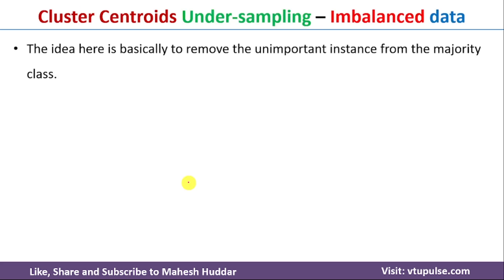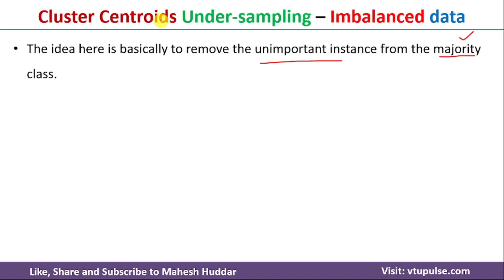Cluster Centroids is an under-sampling technique where we remove unimportant instances from the majority class. Whenever we have an imbalanced dataset, there will be one class called the majority class and another called the minority class. From this majority class we will remove unimportant instances using this technique.